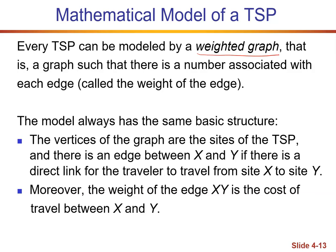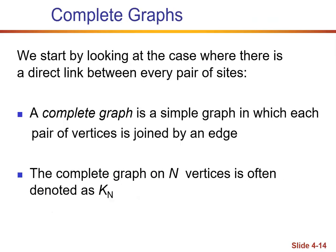The model always has the same basic structure. The vertices of the graph are the sites of the traveling sales problem. There is an edge between X and Y if there is a direct link for the traveler to travel from site X to Y. Moreover, the weight of the edge X,Y is the cost of the travel, and again, cost can vary slightly.